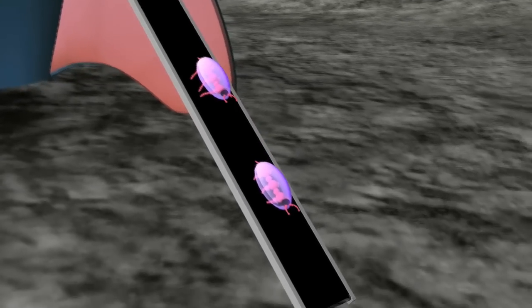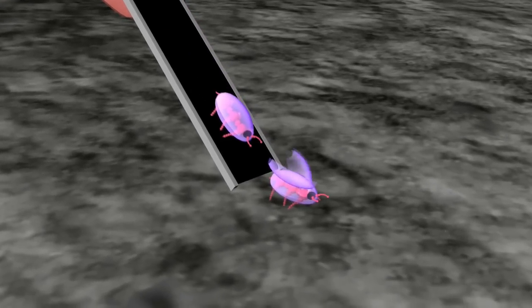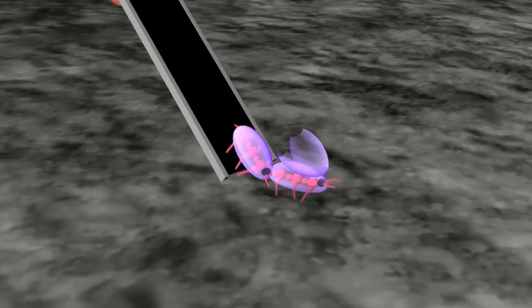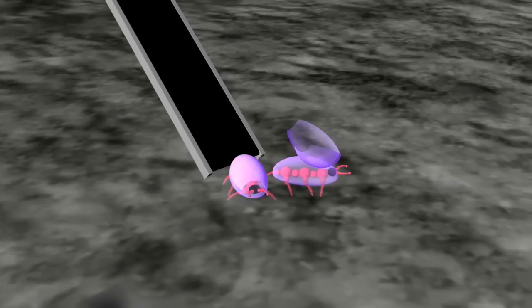Two small steps for virtual creaturehood. And they're opening their solar collecting energy wings and moving around a little bit.